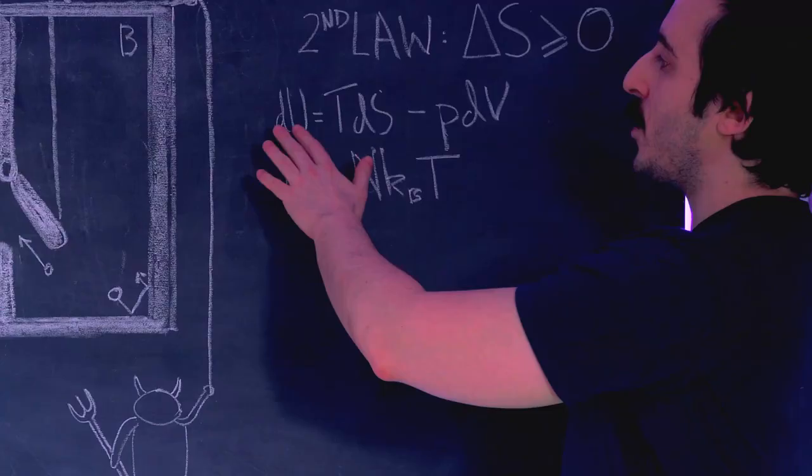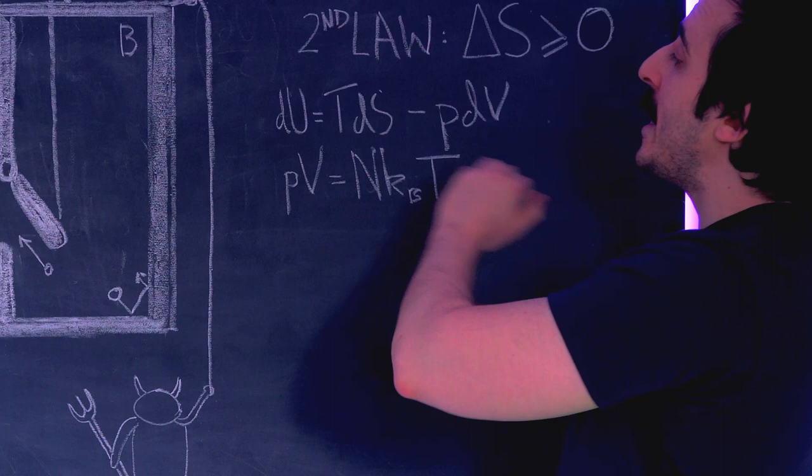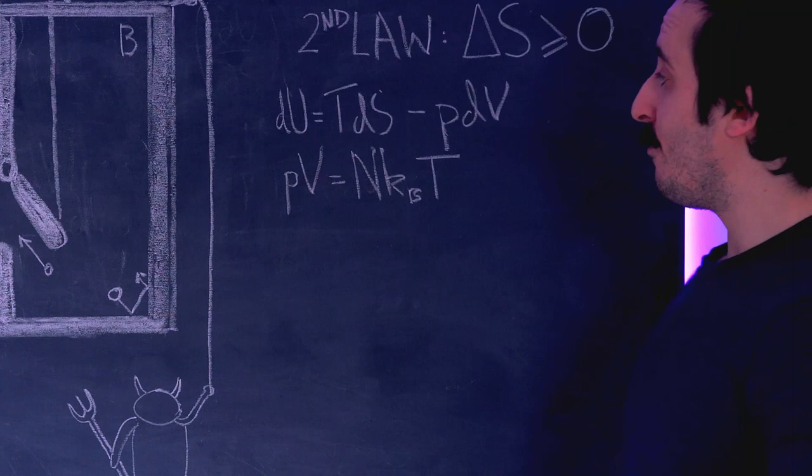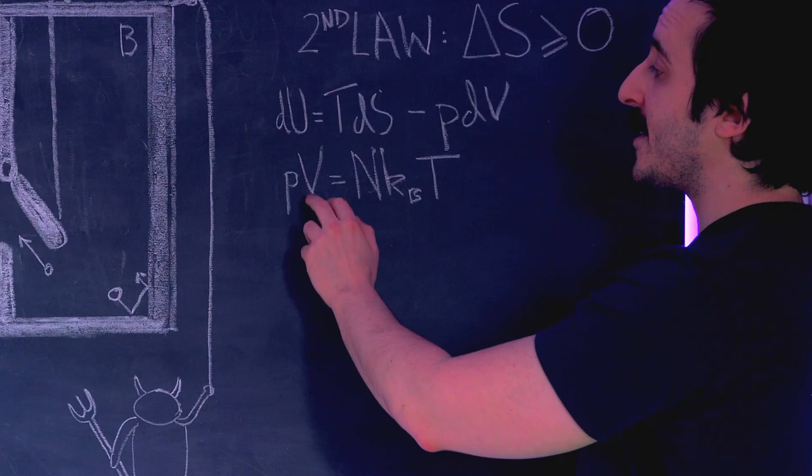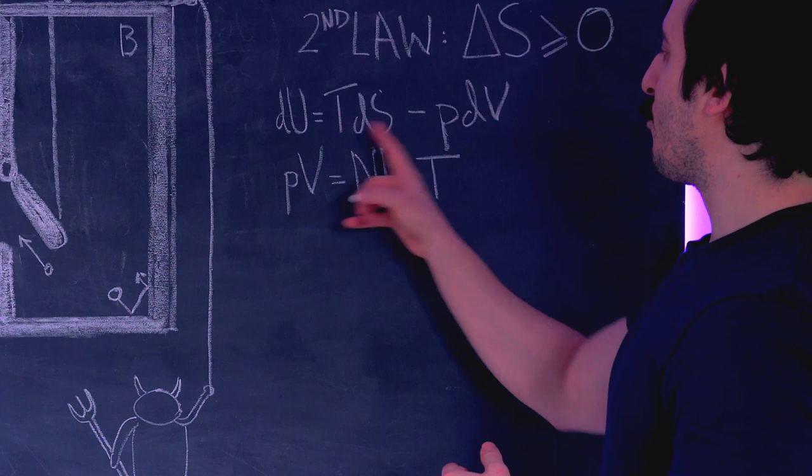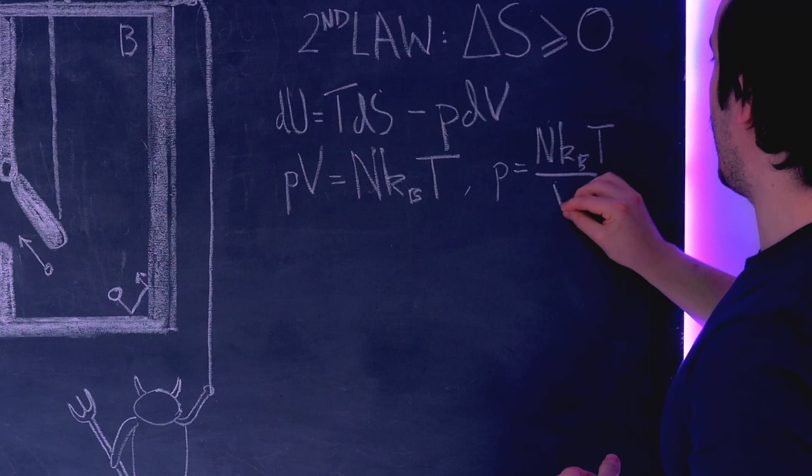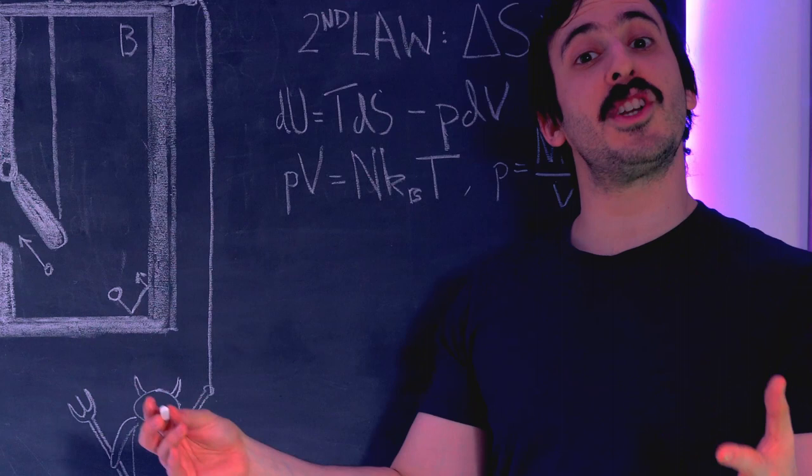Let's do the proof. In the last video we saw that the first law of thermodynamics can be expressed in the form du, the change in internal energy, is equal to the temperature multiplied by the change in entropy minus the pressure multiplied by the change in volume. We also saw the ideal gas law that says for an ideal gas, pressure times volume is equal to n, the number of molecules, multiplied by kb, the Boltzmann constant, multiplied by the temperature T. What I'm going to do first is rearrange this—you'll see why in a second. So here we have pressure is equal to n kb T over V.